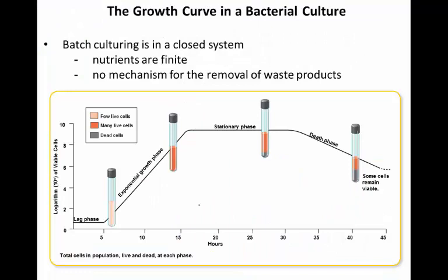One important element of this is what we consider the bacterial growth curve. One thing to note is that this is batch culturing in a closed system — meaning this is what happens in a test tube, not necessarily out in the environment. The issue with culturing organisms in a test tube is that nutrients are finite, and so is space. There will also be no mechanism for removing waste products, so any waste that is created stays within the test tube. We see four phases in this bacterial growth curve.